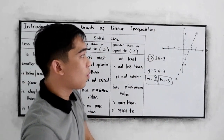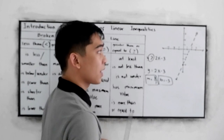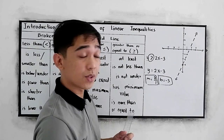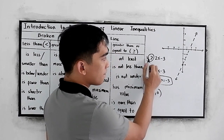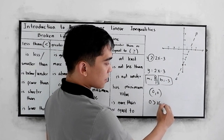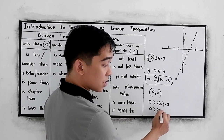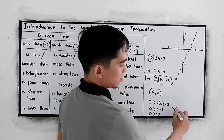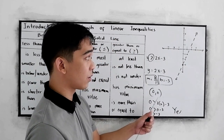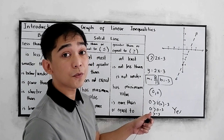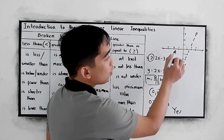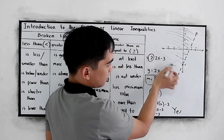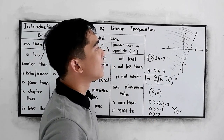Since this is an inequality, we need to determine which part of the Cartesian plane to shade. We test the point (0, 0): 0 is greater than 2 times 0 minus 3, which gives 0 greater than negative 3. Yes, that is true — it satisfies our inequality. Therefore, we shade the region that includes the origin. This will be our graph.